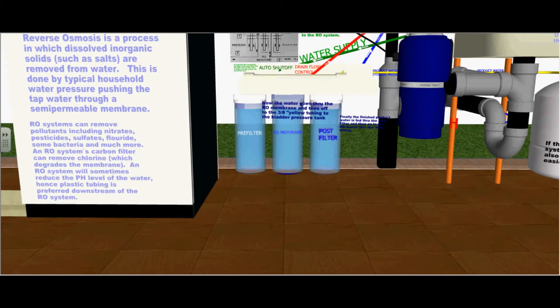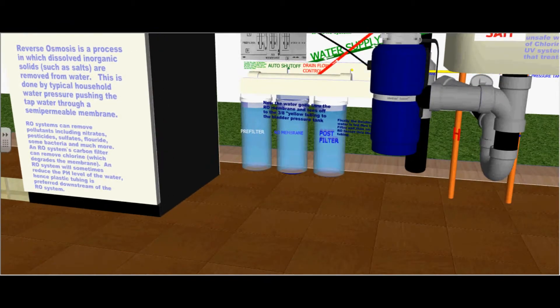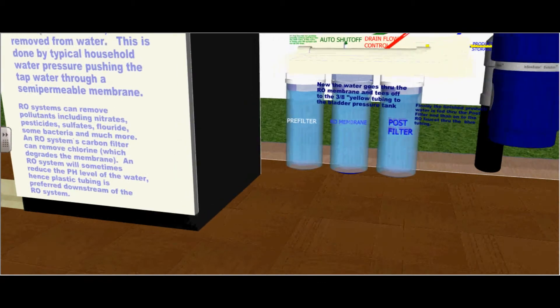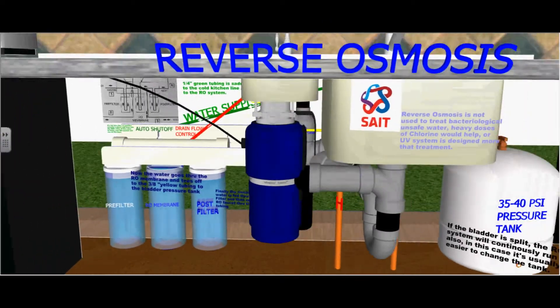As RO systems will sometimes reduce the pH level of the water, plastic tubing is preferred downstream of the RO system. Here you see the first filter on the left is the pre-filter or carbon filter, and the middle filter is the membrane.